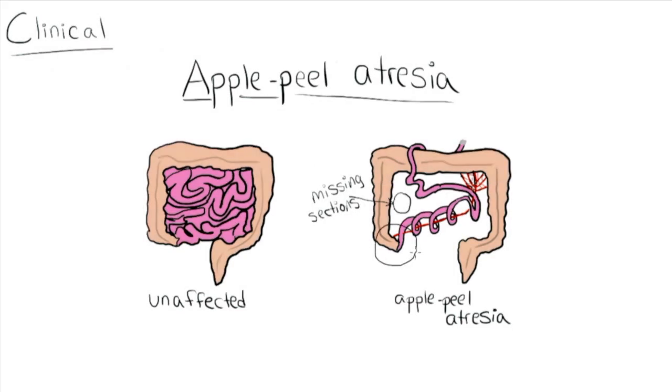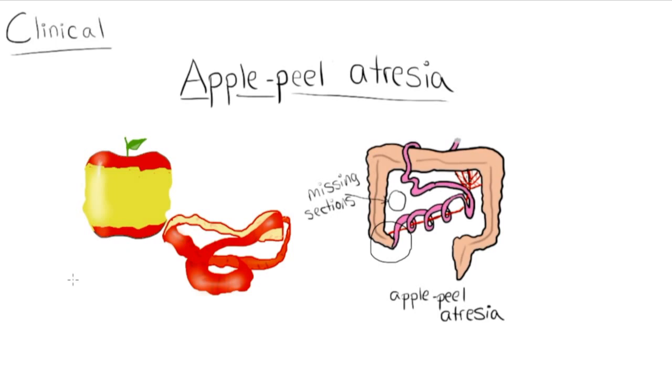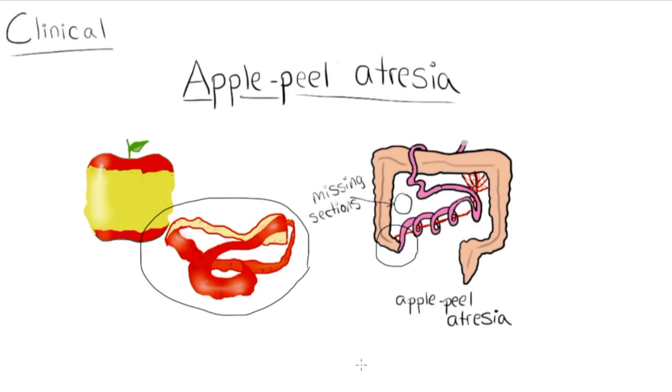Apple-peel atresia refers to a proximal small intestine that ends in a blind pouch, while the atretic distal small intestine wraps around its blood supply in a spiral, kind of like when you cut off an apple peel in a single piece. A significant portion of the small bowel is often missing, and occasionally there's intestinal malrotation, or failure of the intestines to properly rotate outside of the body during embryonic development.